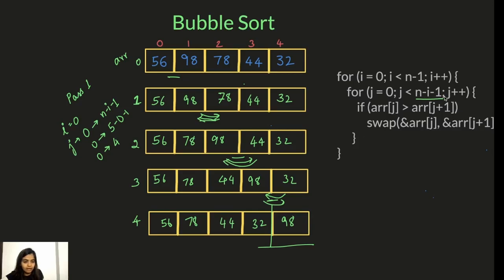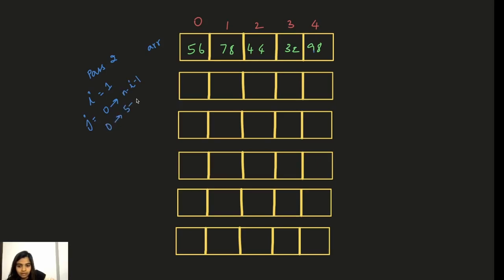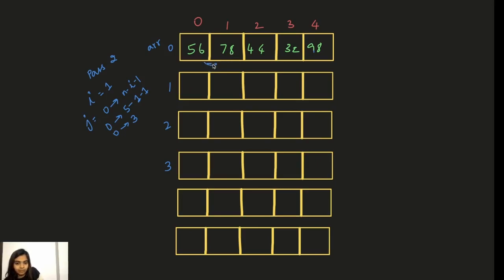Let's start with pass two. Our array now has 98 at the end, already sorted. This is pass two where i is equal to 1. So j will go from zero to n minus i minus one — that is zero to five minus one minus one, which is three. So j goes from zero to three.